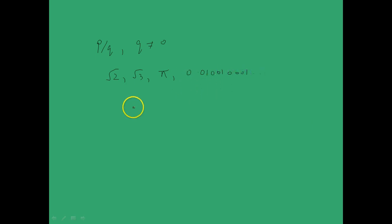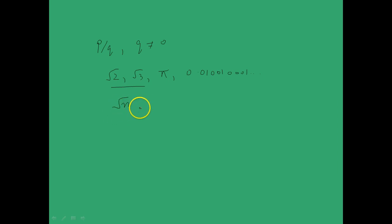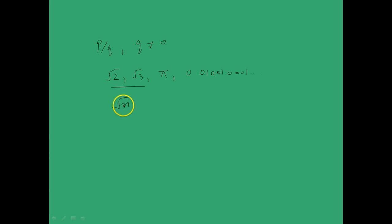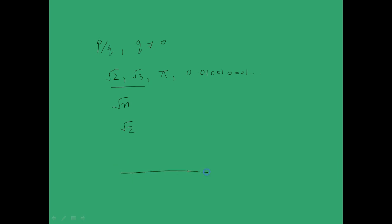More on this later. Now we will first take up the case of numbers which look like root over n. Please keep in mind that root over n for all natural numbers need not be irrational — root over n is irrational only for some natural numbers. Now we will look at the representation of root over n, and to start off we will look at the representation of root 2 on the number line.